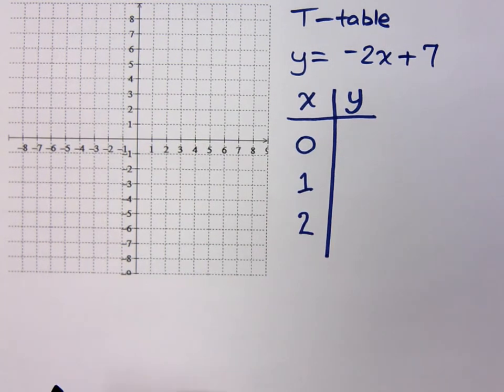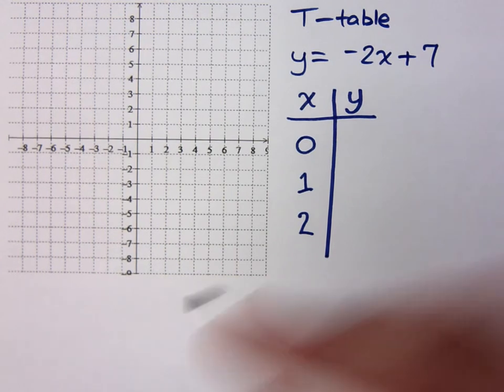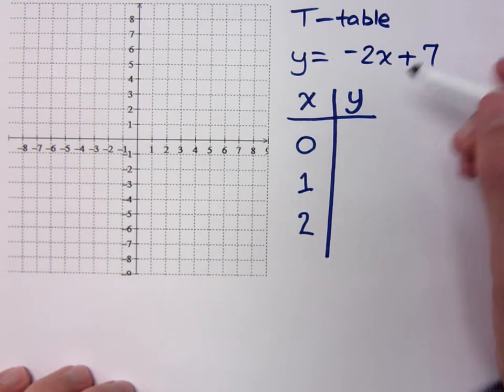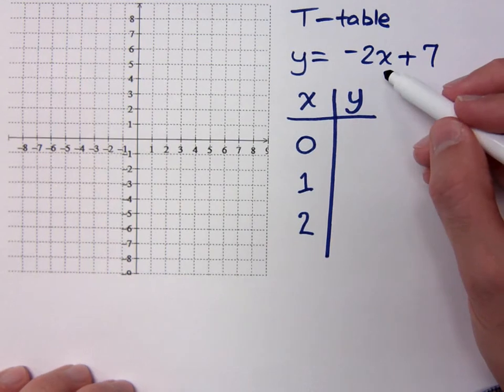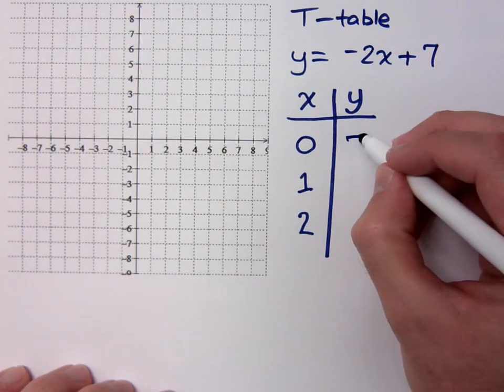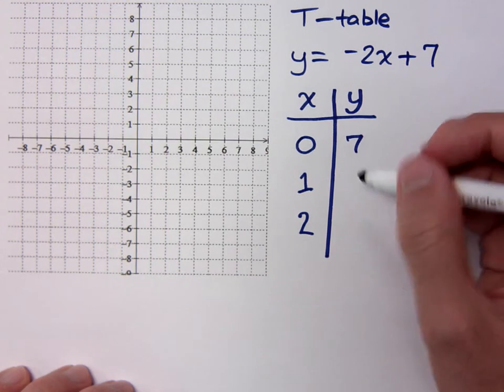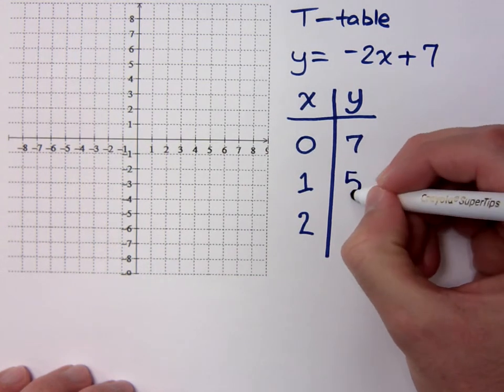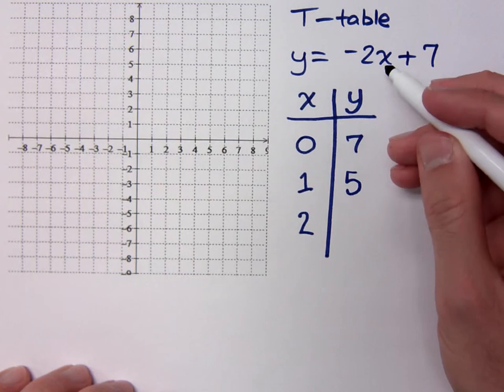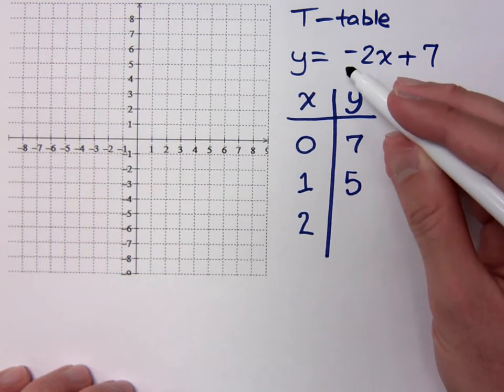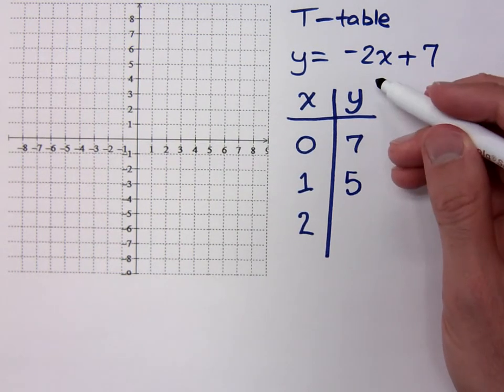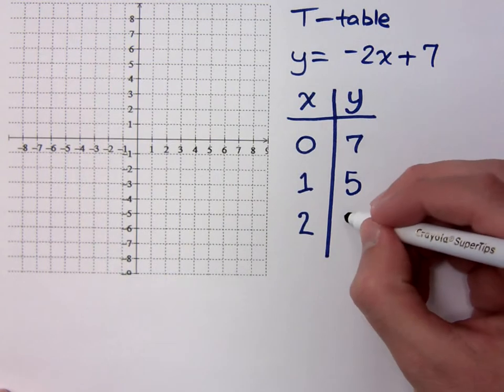Now, if I have 0, 1, and 2, you're just trying to plug those into this equation and tell me what y equals. If x is 0, plug that in, what do you get for y? You get 7. If I plug in 1, what do I get? I get 5. And if I plug in 2, negative 2 times 2 is negative 4. Negative 4 plus 7 is positive 3.